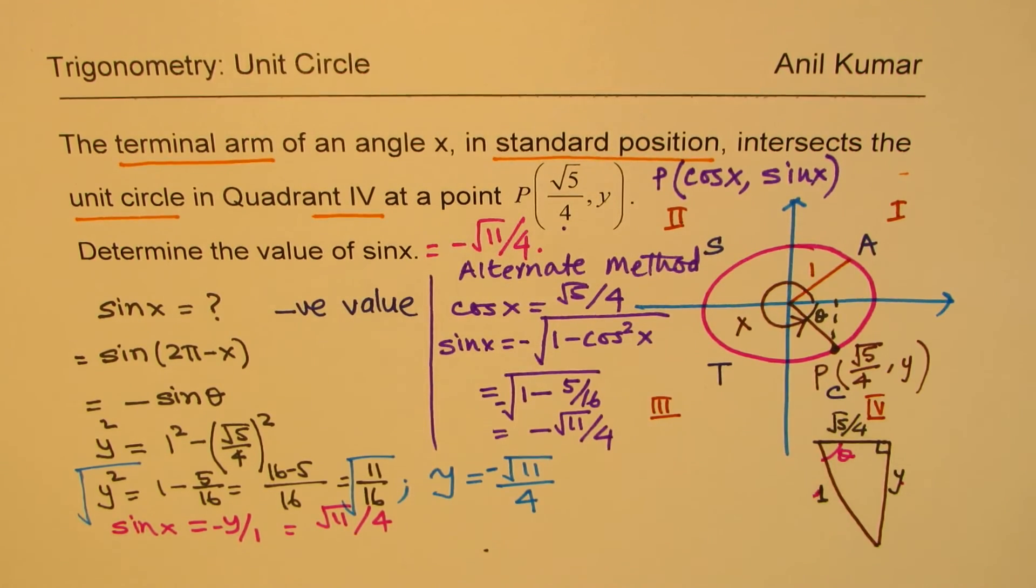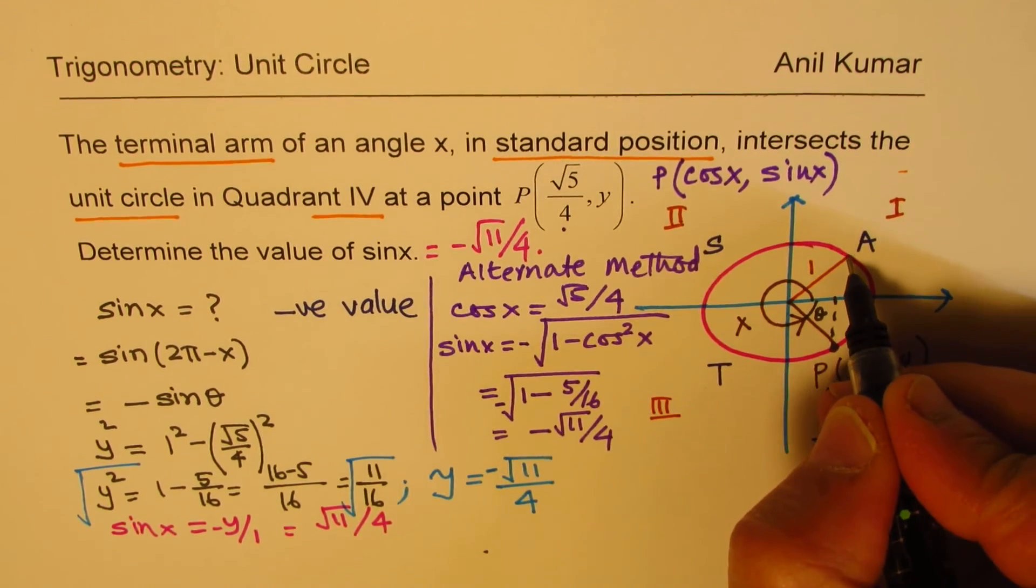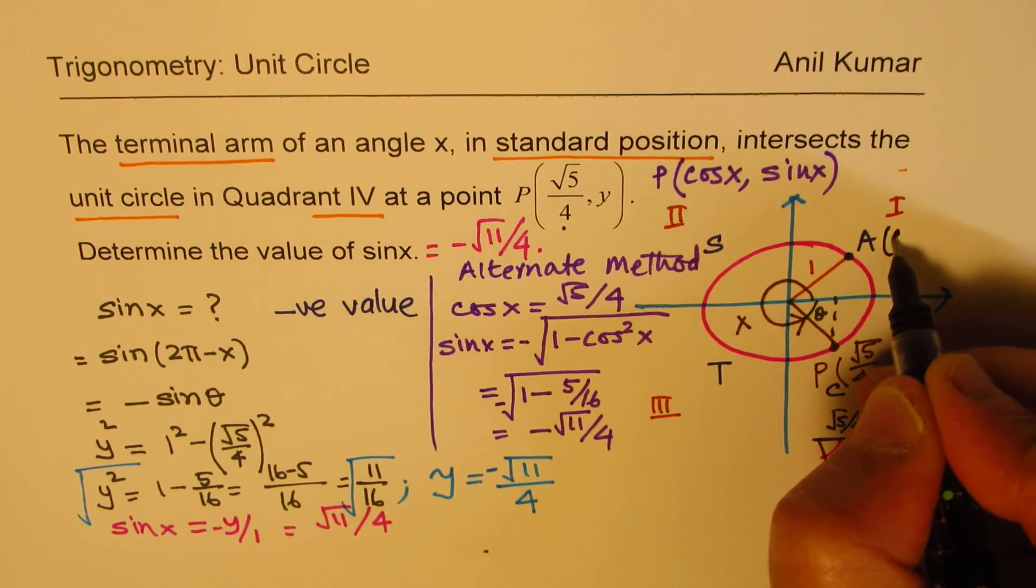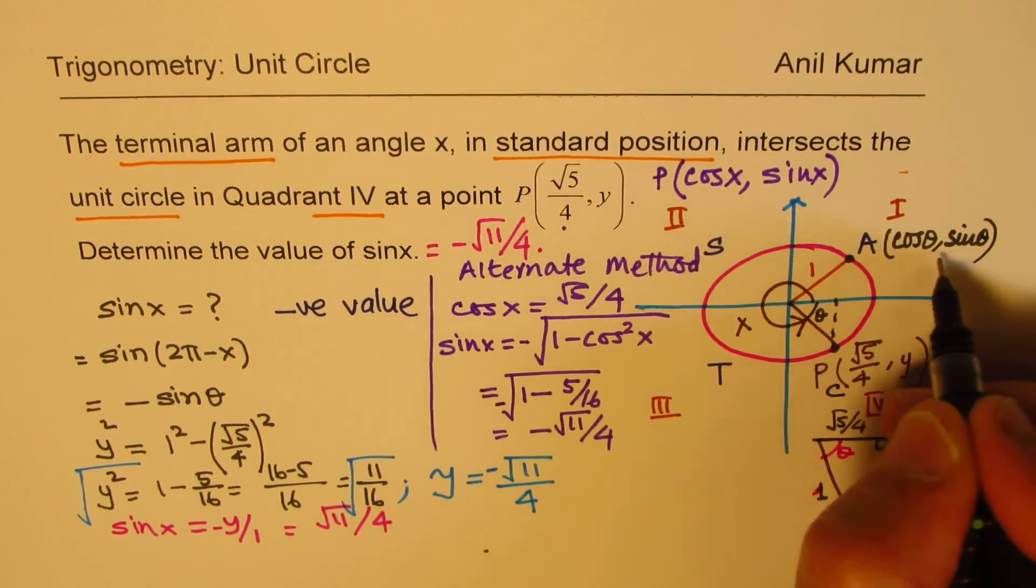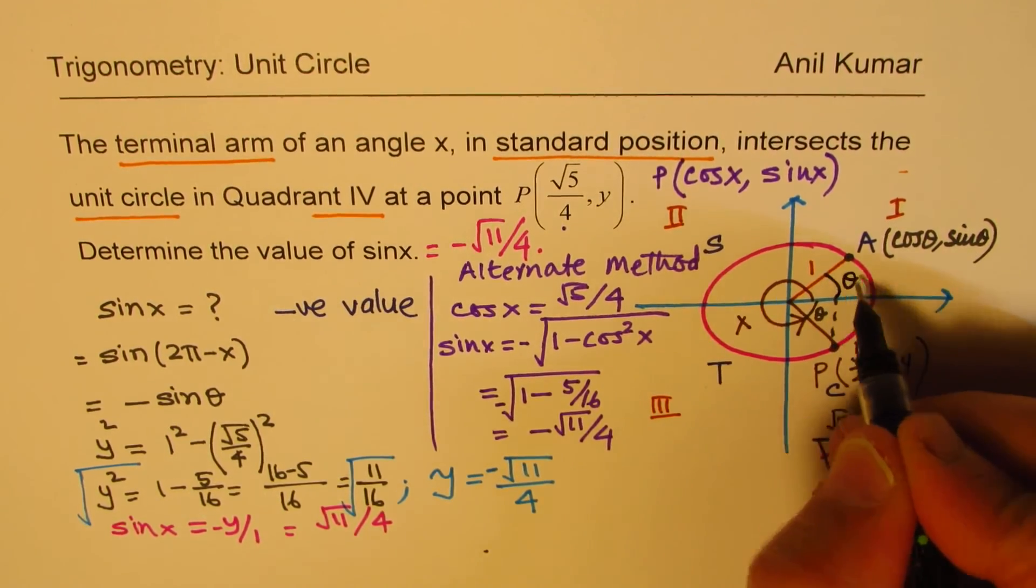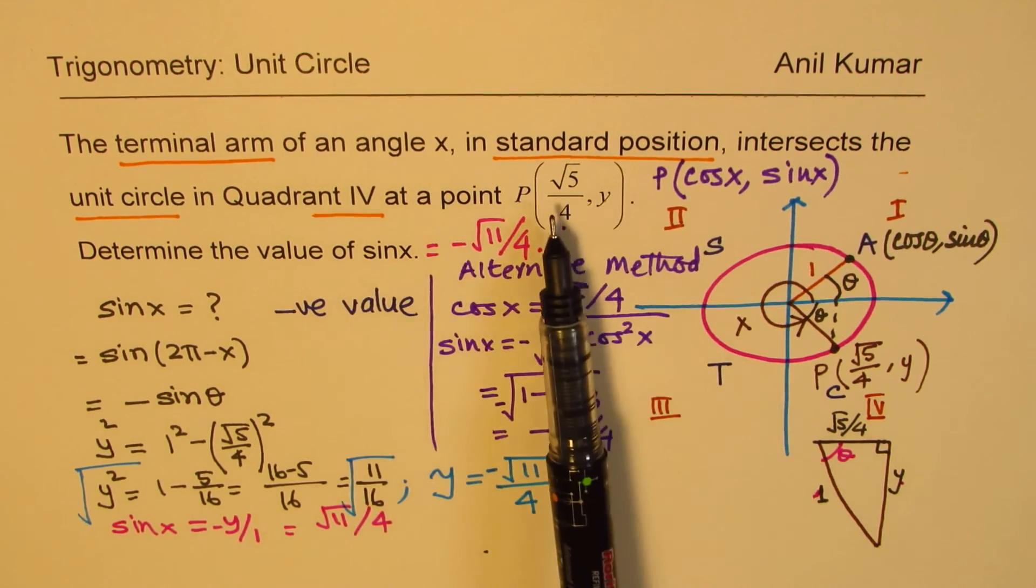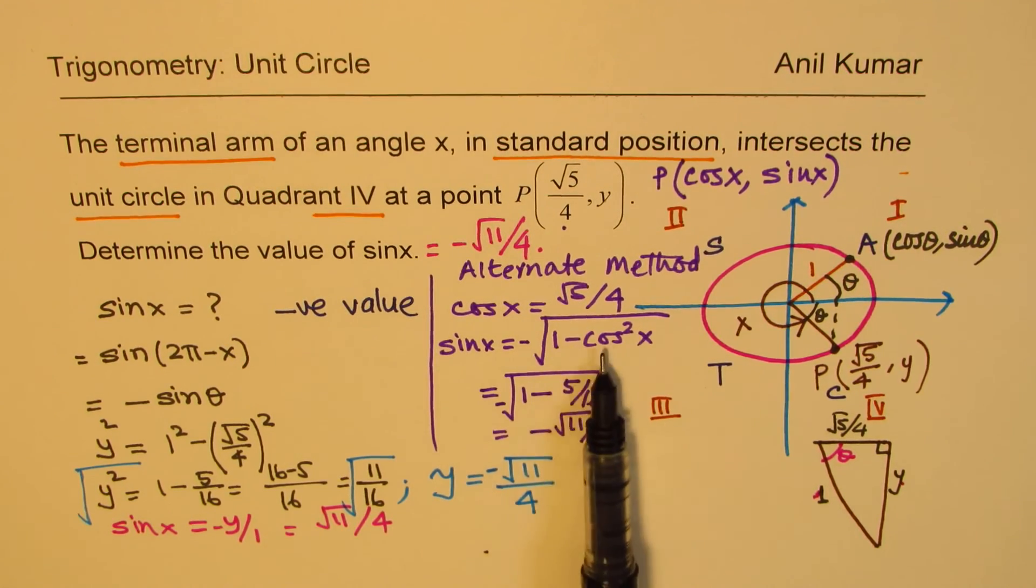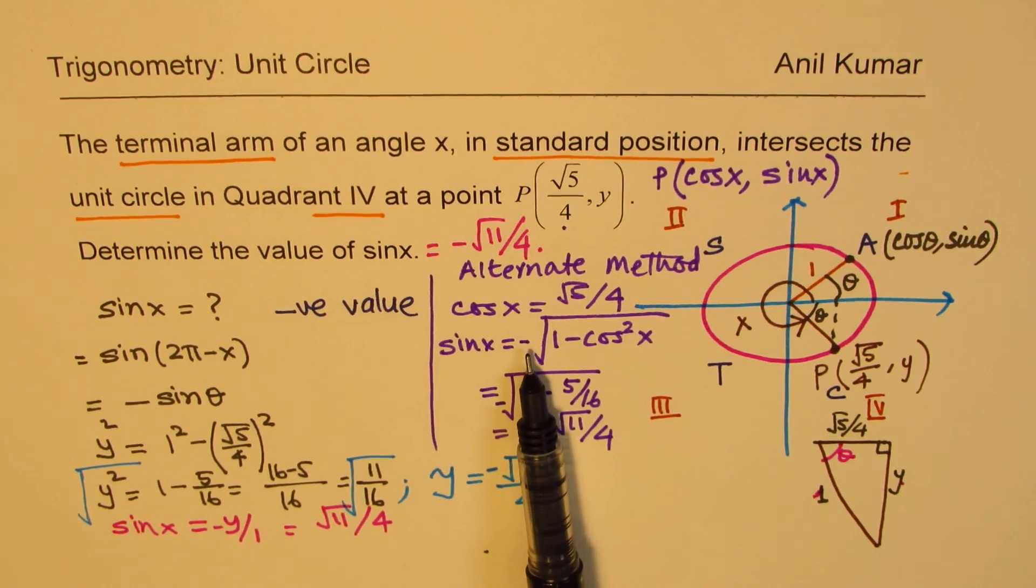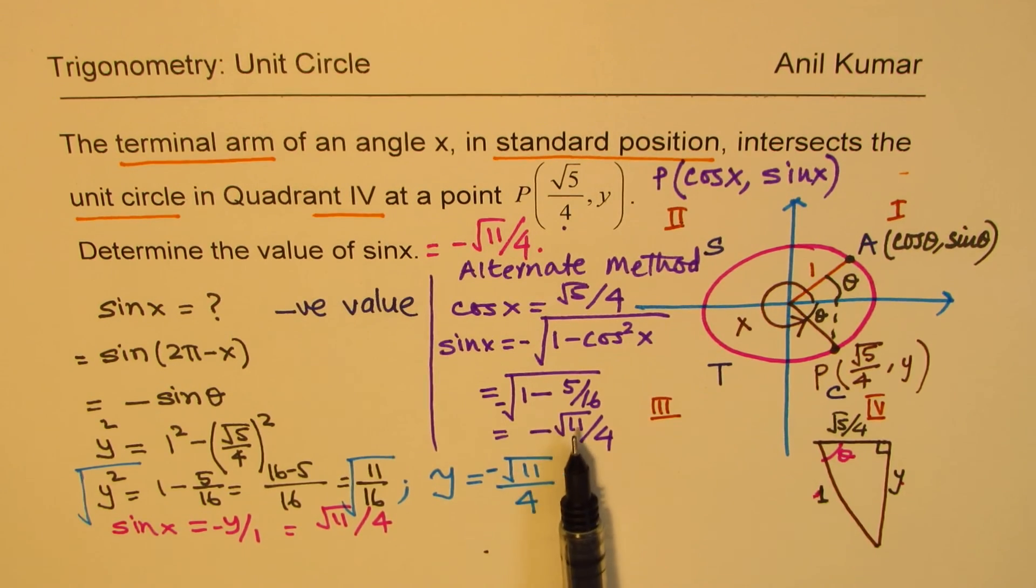So you could have done the alternate method to immediately get your result. Key, key is that any point here is given as cos of that angle θ times sine of that θ. So any coordinate is cos θ, sine θ, if the angle is θ. So in our case, cos θ is given to us. We need to find what sine θ is. Sine θ is square root of 1 minus cos squared θ. Since you are in quadrant 4, you have to take the negative value. So we get negative square root 11 over 4 as our answer. That is how we are going to solve it. So I hope that helps.